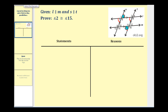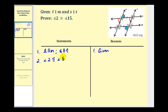Let's go ahead and write this out. Step one: state the given information — L is parallel to M and S is parallel to T. This is given. Step two: angle two is congruent to angle five, by definition of vertical angles. Step three: angle five and angle seven are congruent because they're corresponding angles, using the parallel lines S and T cut by L.